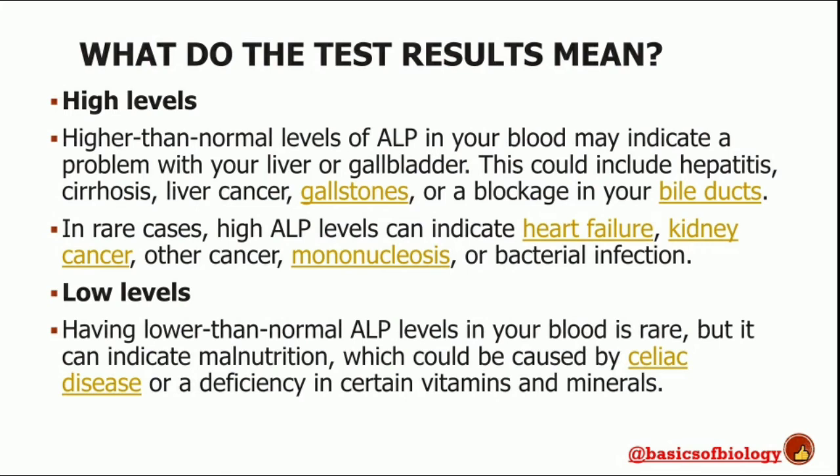Higher levels may also indicate an issue related to the bones, such as rickets, Paget's disease, bone cancer, or an overactive parathyroid gland. In rare cases, higher levels of alkaline phosphatase can indicate heart failure, kidney cancer, other cancers, or bacterial infections.